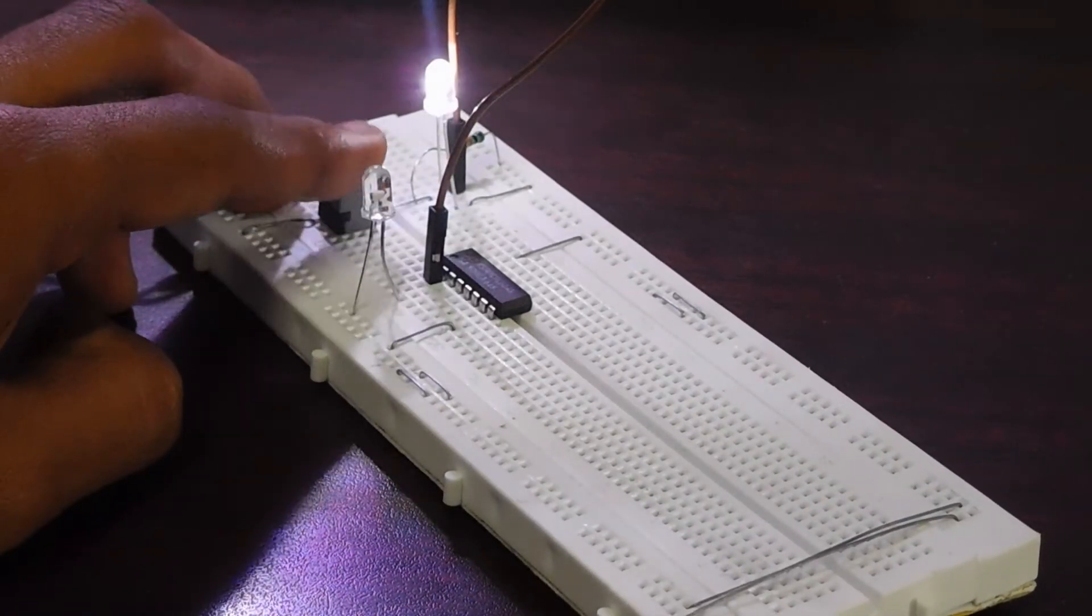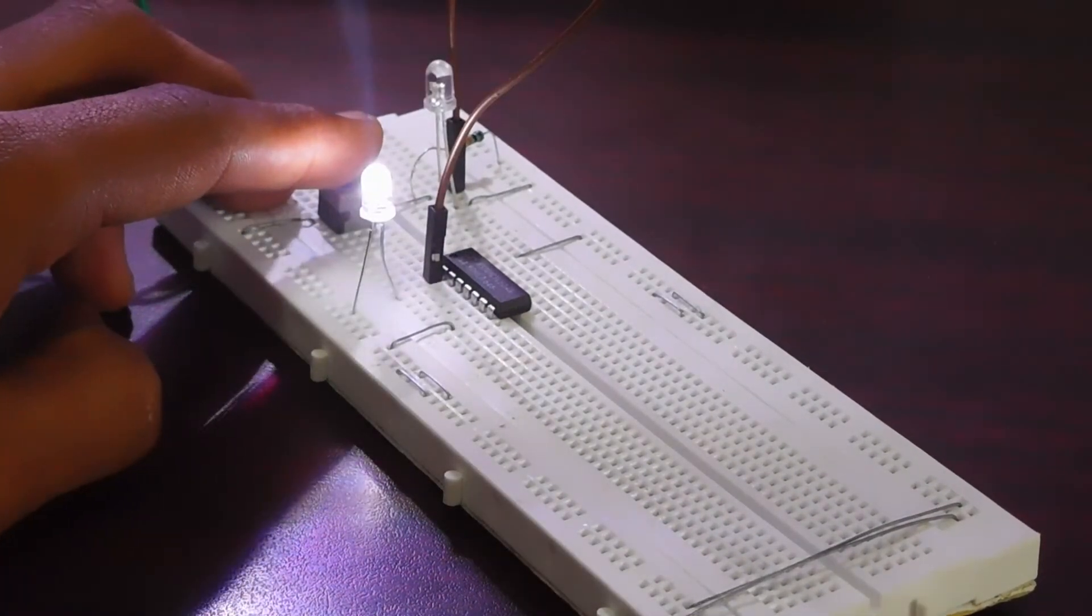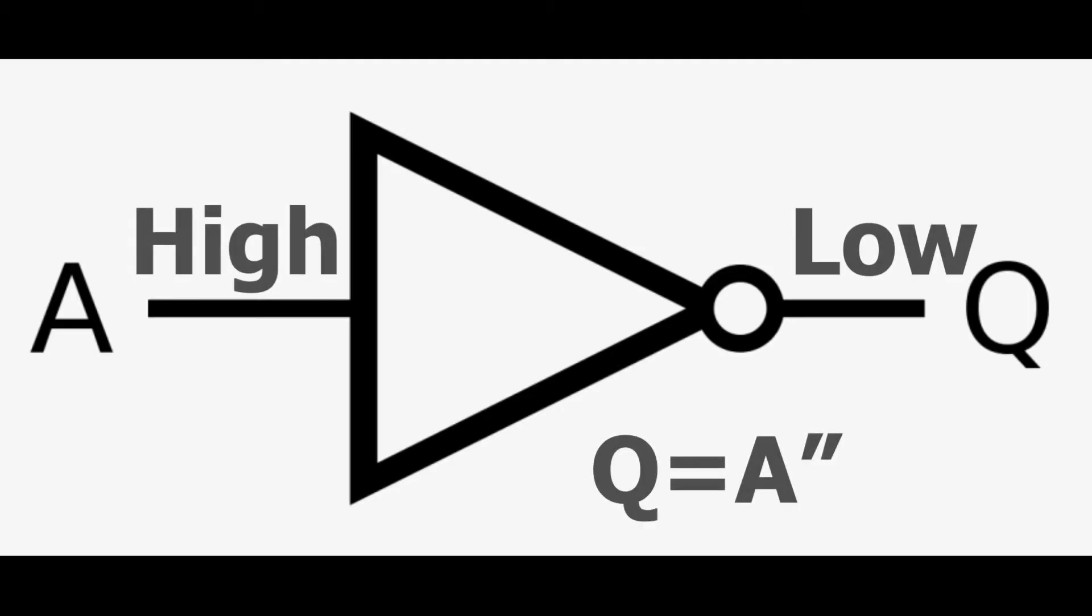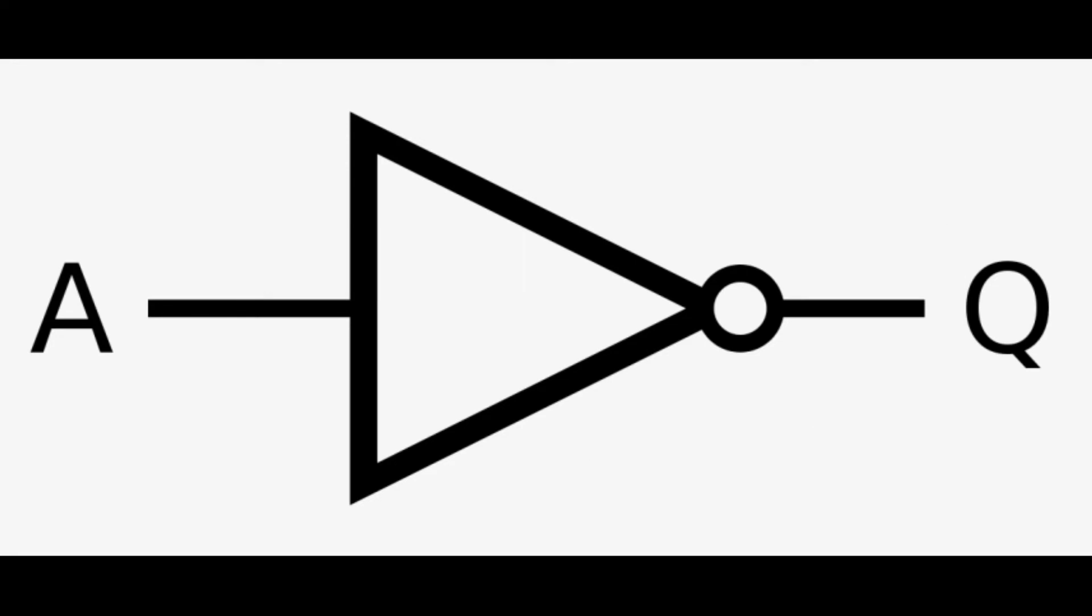When the switch is at low state, the output was high. The output LED glows, which means it is working fine. But if I make the switch go to high state, then the output LED does not glow, as the output will be always opposite to the input in an inverter gate.